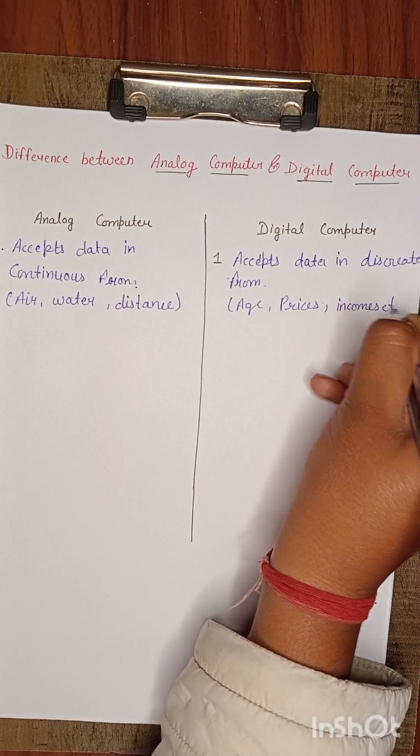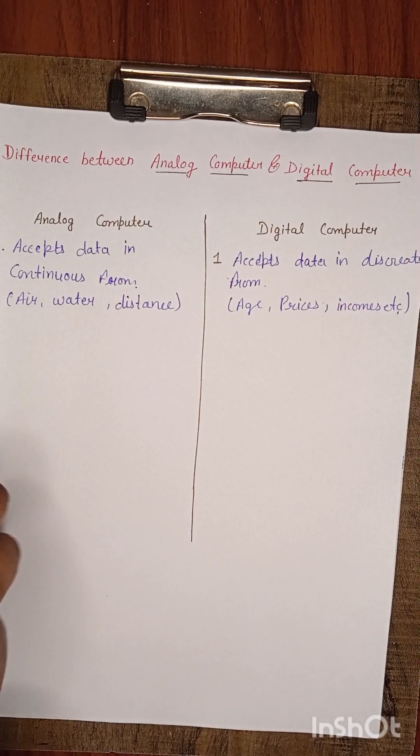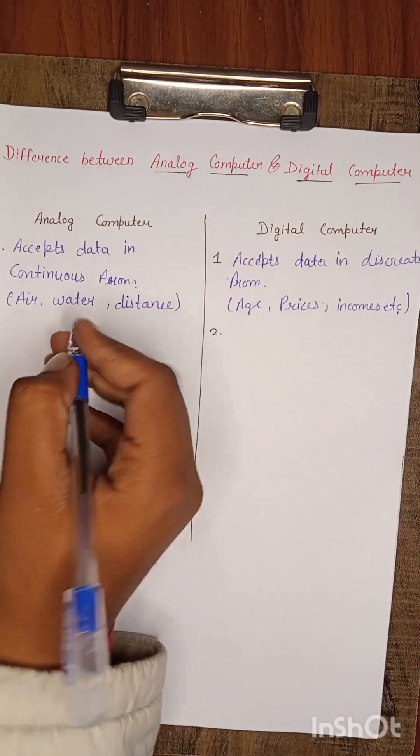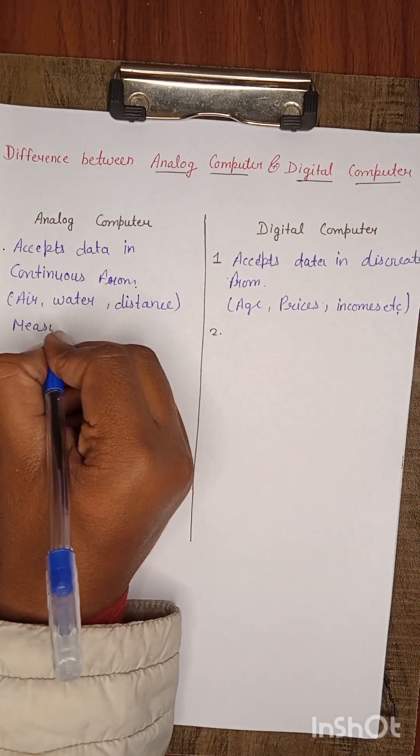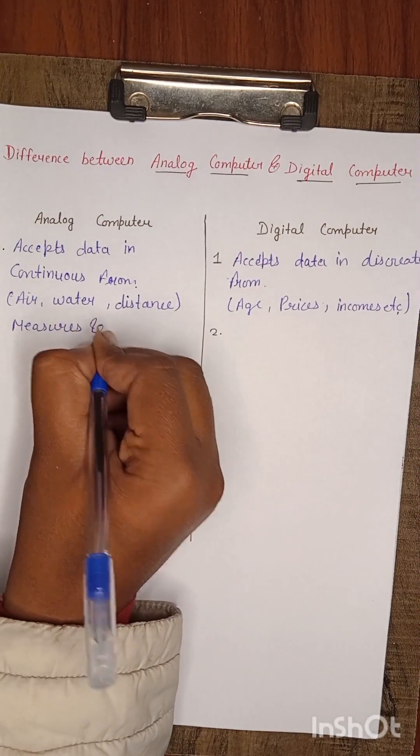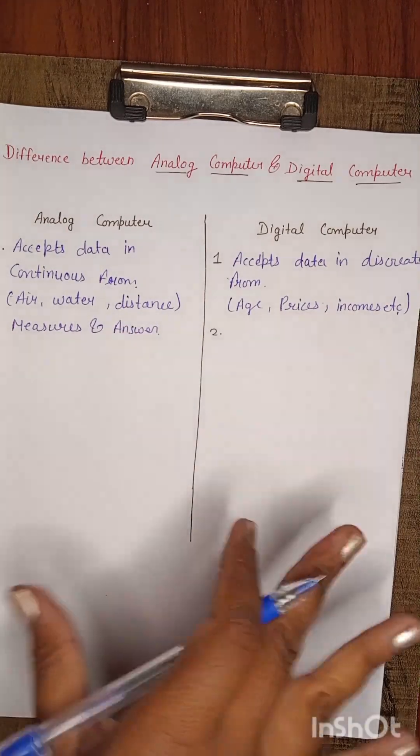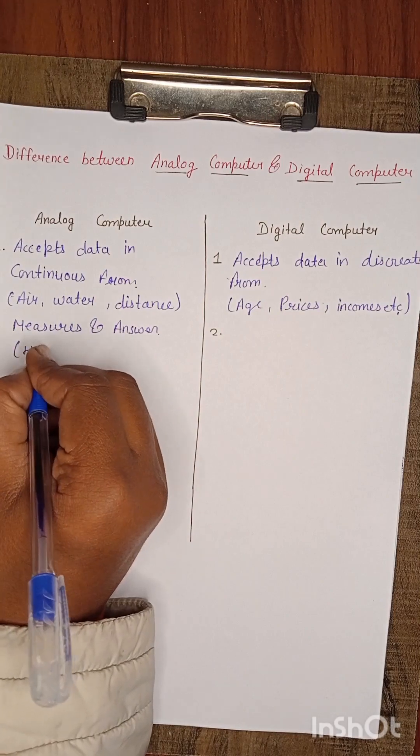Second point is Measures and Answers. Analog computer measures the quantity and results, measures how many.